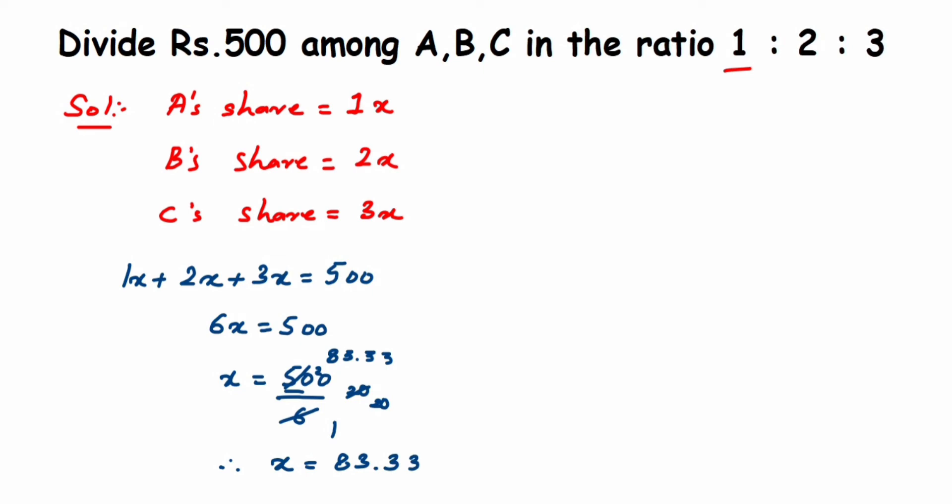This is not yet over. We have to find the share of each A, B, and C. Therefore, A's share, which was equal to 1x, is 1 × 83.33, which will be Rs. 83.33.